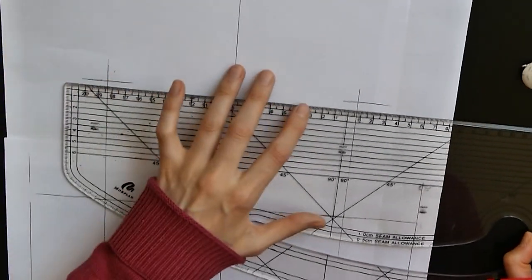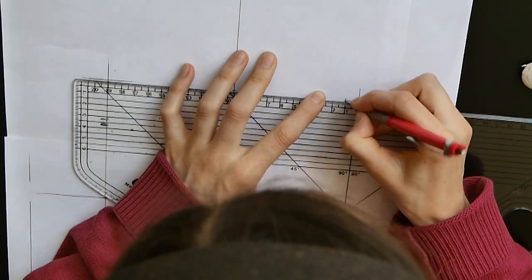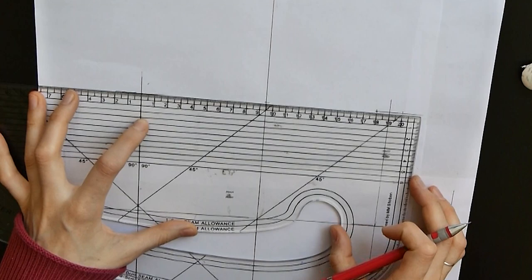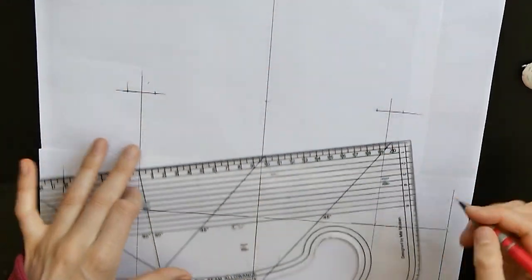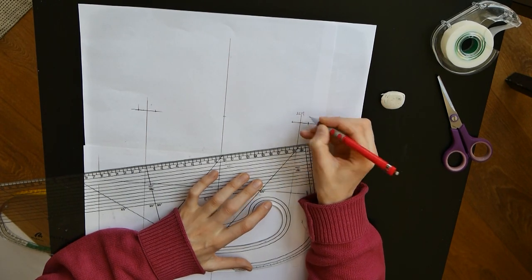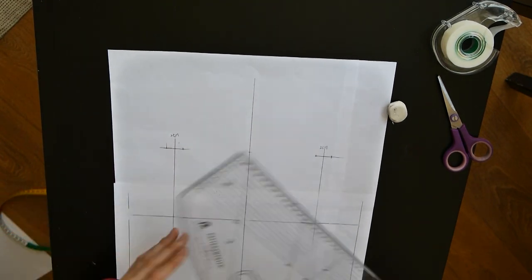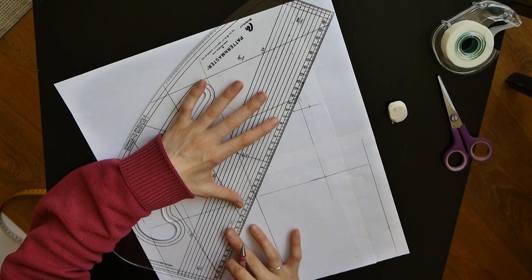I want my shoulder strap to be 2 centimeters wide so I'm going to mark 1 centimeter each side like so. All I have to do is to connect all these points.